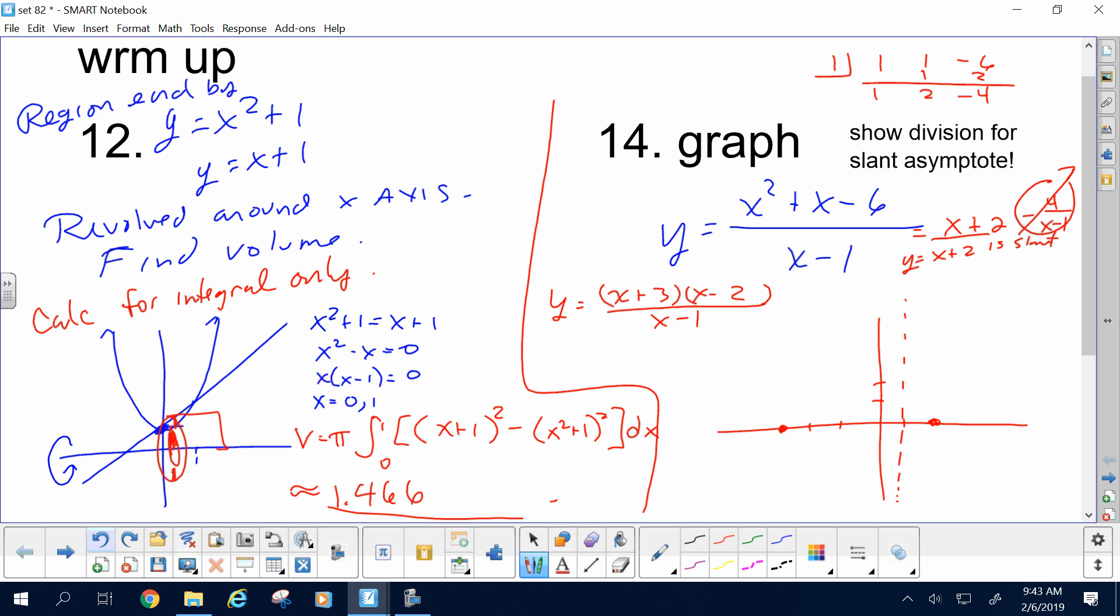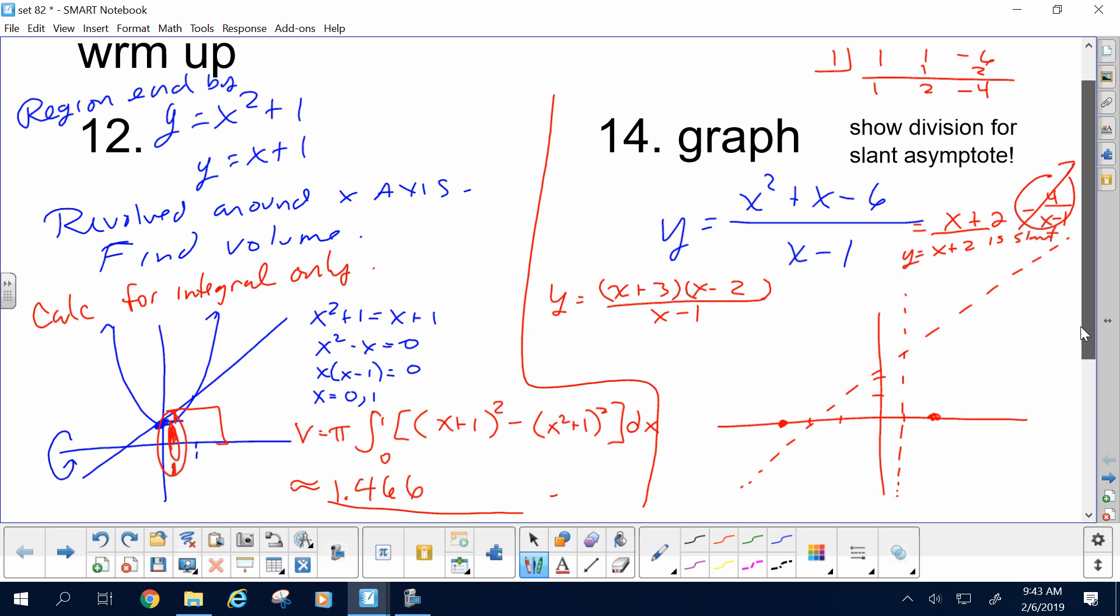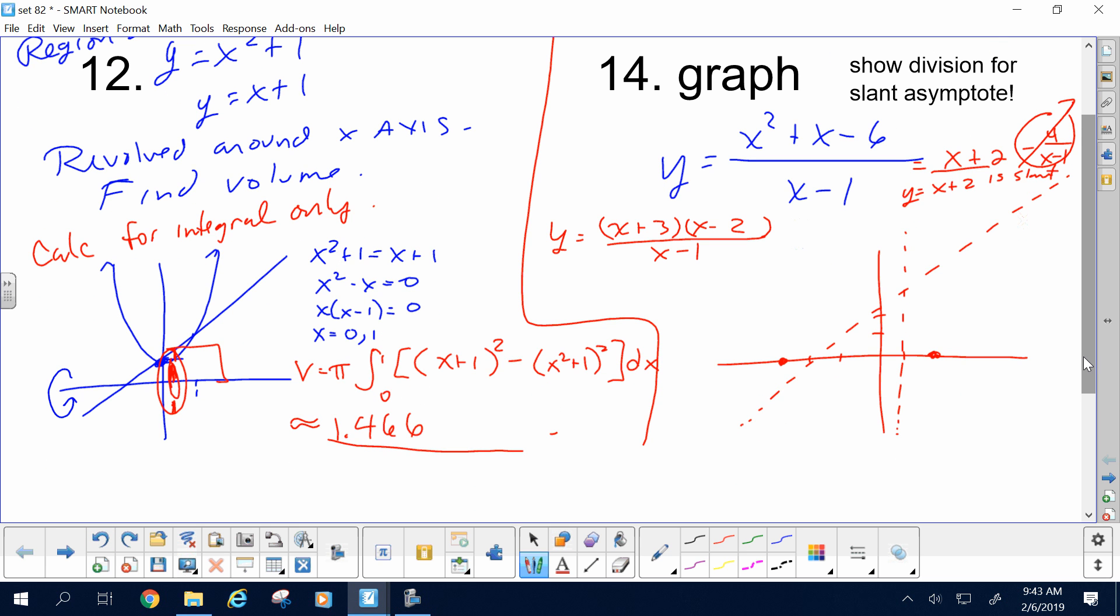If y equals x plus 2 is the slant, then the graph will also follow this graph. Now, in terms of signs, I'm sign testing the factored form of the graph. Left of negative 3, like a negative 5, I'd be negative, negative, negative, which is negative. Now, if the graph is negative, but it's got to follow the slant asymptote, then follow the slant asymptote below the axis until it comes up to that x-intercept. Now, by the way, remember that slant asymptote? I say it's the whole thing, but really it's just a guide for the outside, so don't sweat the inside of the slant.